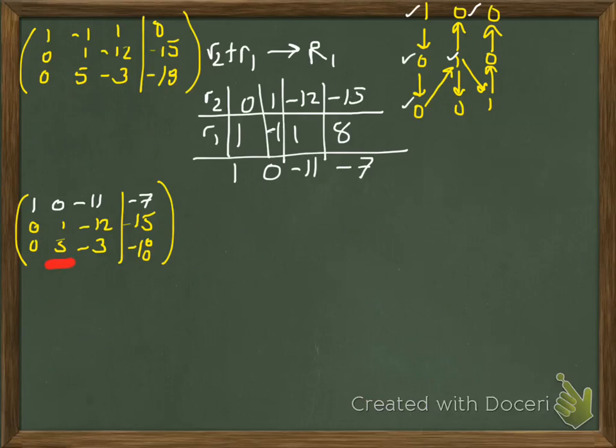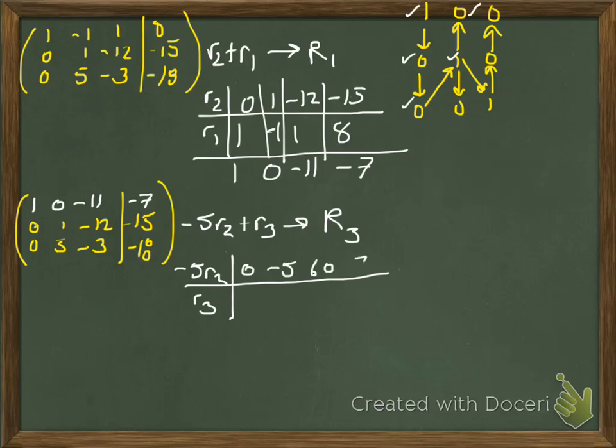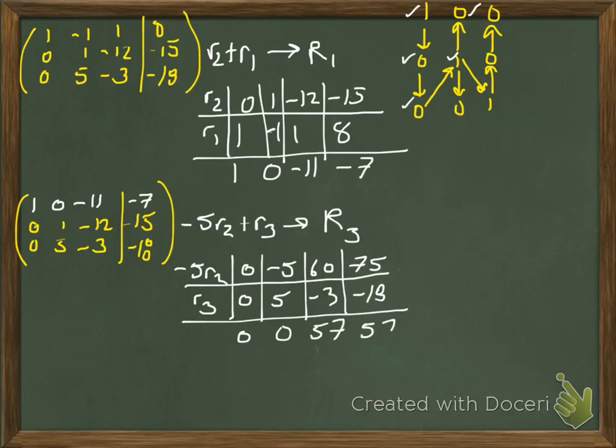We'd like to make this 5 a 0, and it is in column 2. So to make the 0 in column 2, we use row 2. The opposite of 5 is negative 5. All right. So negative 5, row 2, plus row 3, becomes or replaces row 3. So we'll go ahead and write out that arithmetic. Negative 5, row 2. And then we'll add row 3 to it. Okay. So a new row 3 is 0, 0, 57, 57.